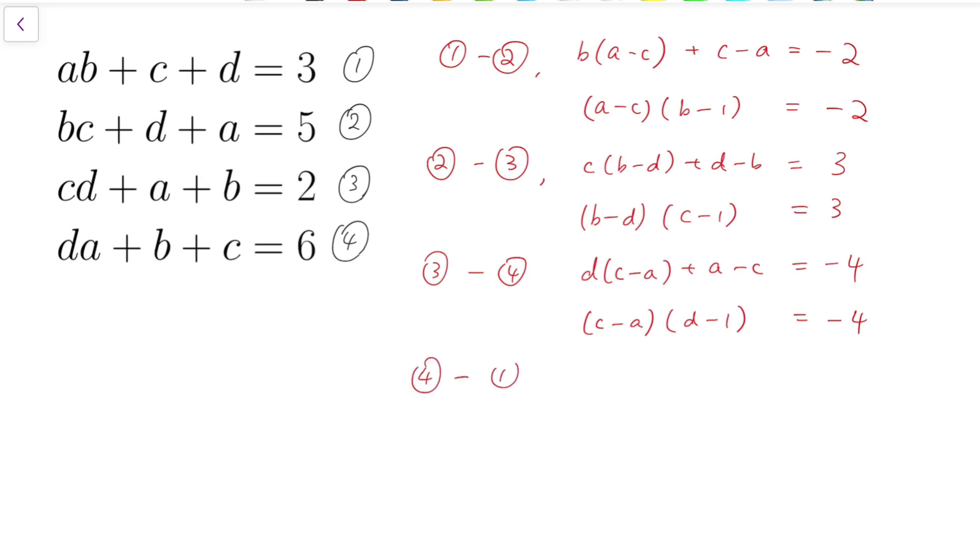Finally, the fourth equation minus the first equation, we have a times d minus b plus b minus d equals 3. And so factoring again, d minus b times a minus 1 equals 3.